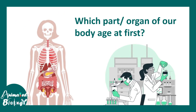Scientists are debating among themselves to understand which part or organ in our body ages first. When we talk about aging, do we know whether our heart ages first or our liver ages first, or is it that all cells of the body age due to specific stress factors or environmental factors? Are there genetics involved in it? All these questions would be answered in this video.